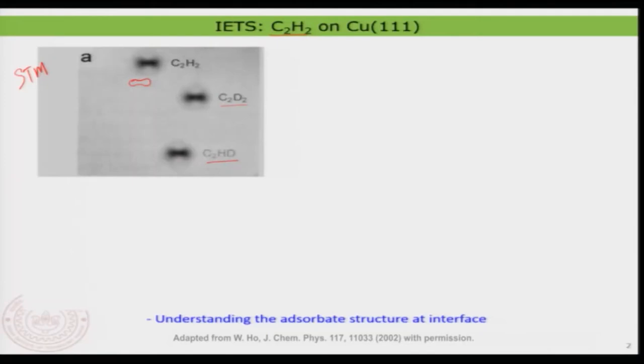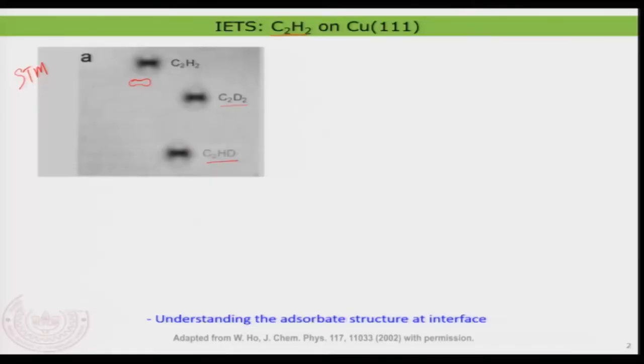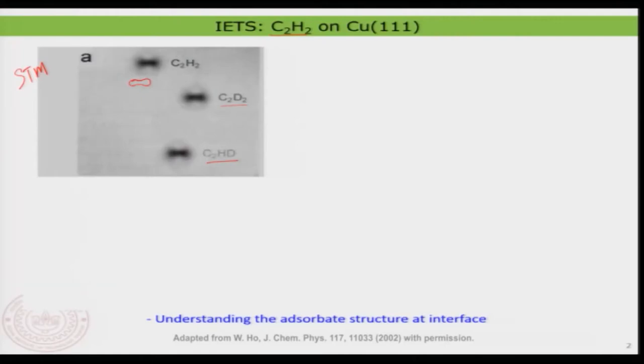In STM, since we are making images and looking at the electron density of the surface or adsorbed molecule, it is hard to define clearly a fingerprint, unlike in spectroscopy. In spectroscopy, every molecule will have a certain fingerprint. With vibrational spectroscopy, you can clearly identify these three species. That is where the inelastic tunneling spectroscopy plays an interesting role. What we are going to do is measure an IETS — the inelastic tunneling spectroscopy — on all these molecules separately, by placing the tip just on top of the molecule.